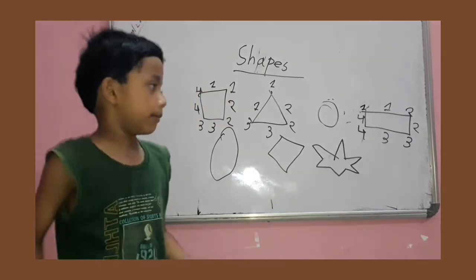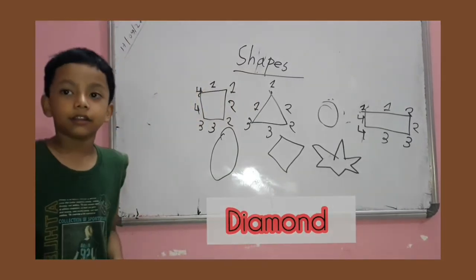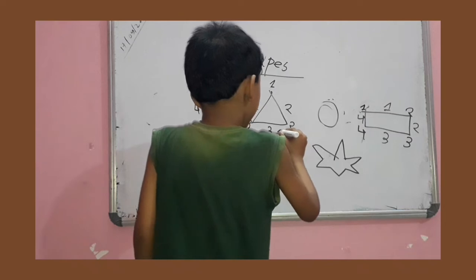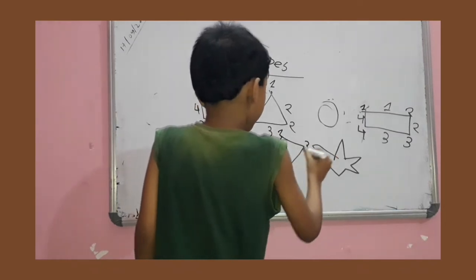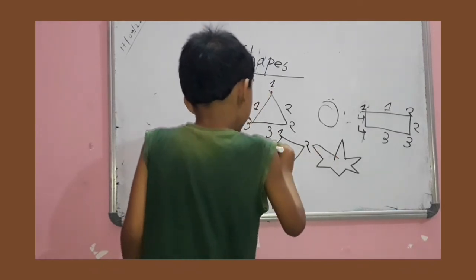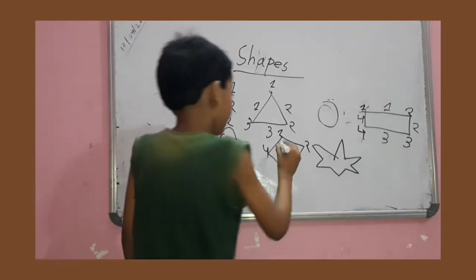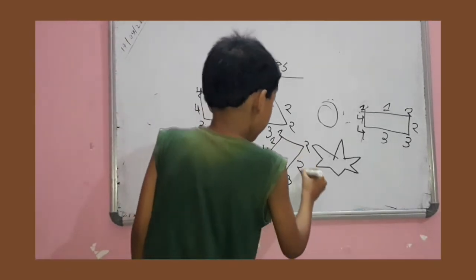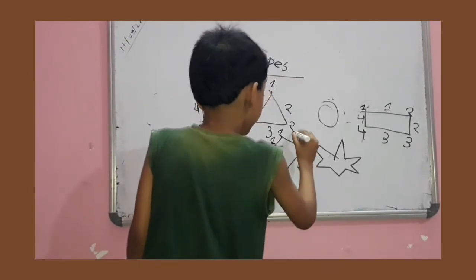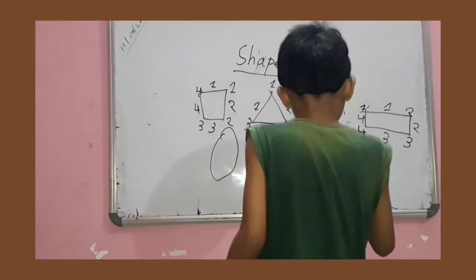Okay, this is a diamond. How many sides in a diamond? How many points? One, two, three, four. Four points. And one, two, three, four. Four sides.